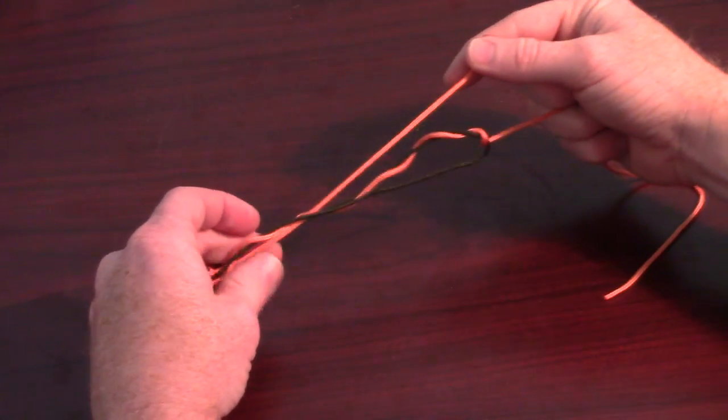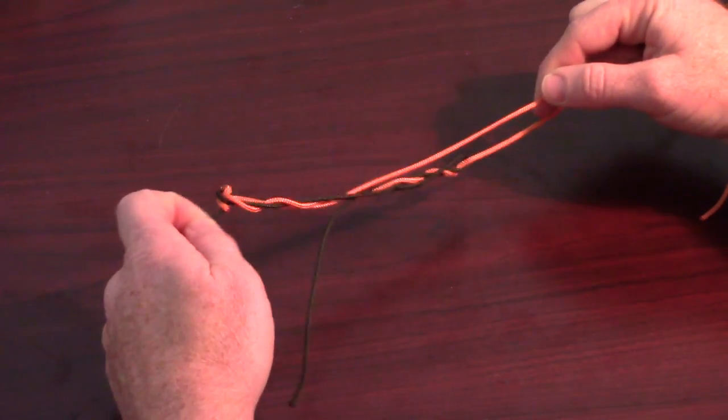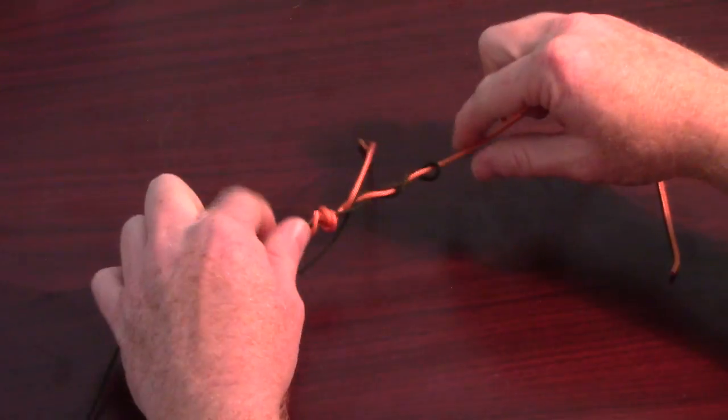Grab both tag ends so they don't slip out, and slowly pull the knot closed. I am using paracord here, so it gets a bit twisted, but this should not happen with mono.